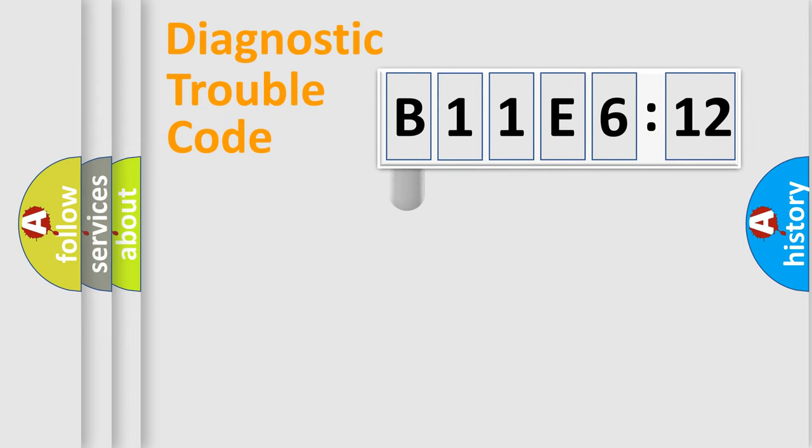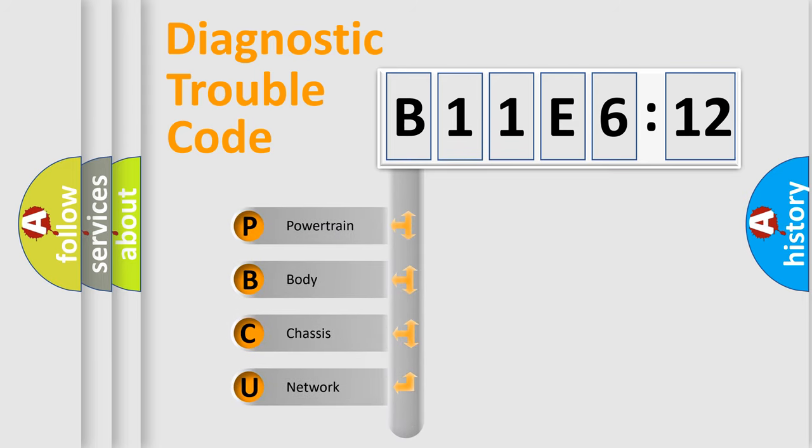First, let's look at the history of diagnostic fault code composition according to the OBD2 protocol, which is unified for all automakers since 2000. We divide the electric system of automobile into four basic units.